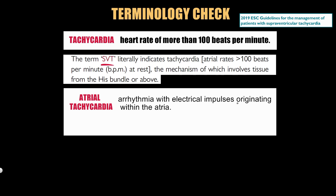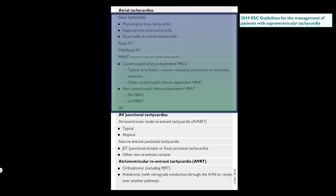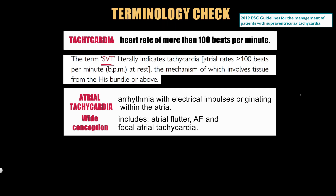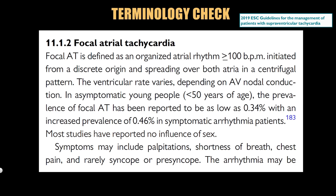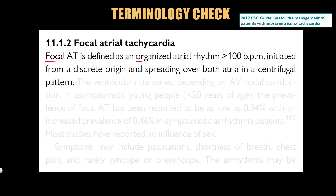Atrial tachycardia is an arrhythmia with electrical impulses originating within the atria. This conception includes macro-reentrant atrial tachycardia, focal atrial tachycardia, and atrial fibrillation. This video relates only to focal atrial tachycardia. Focal atrial tachycardia is defined as an organized atrial rhythm — three or more consecutive atrial contractions with a heart rate greater than or equal to 100 beats per minute — initiated from a discrete origin and spreading over both atria in a centrifugal pattern.